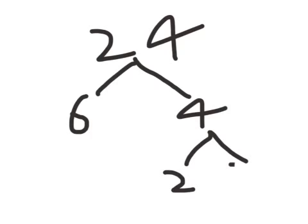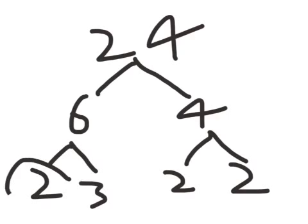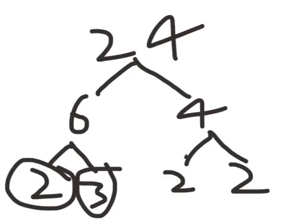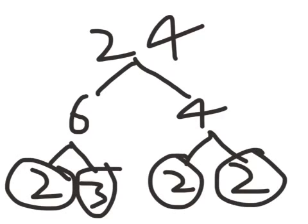4 can be broken down into 2 and 2, and 6 can be broken down into 2 and 3. All of these are prime numbers so you cannot break them down. And also, all these prime numbers will be the same no matter what factor tree you do for 24.